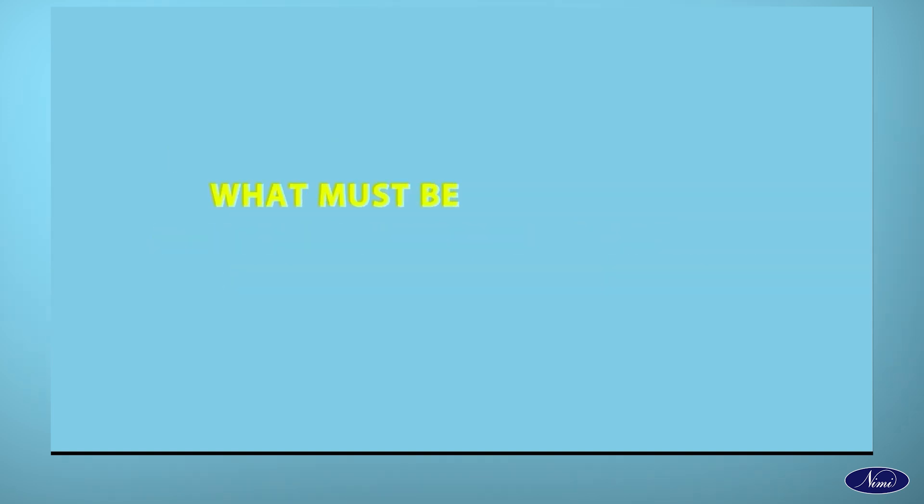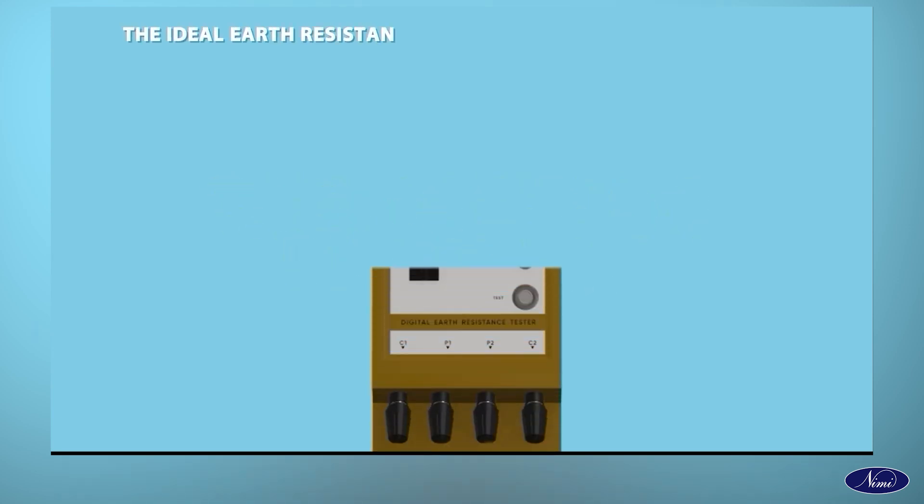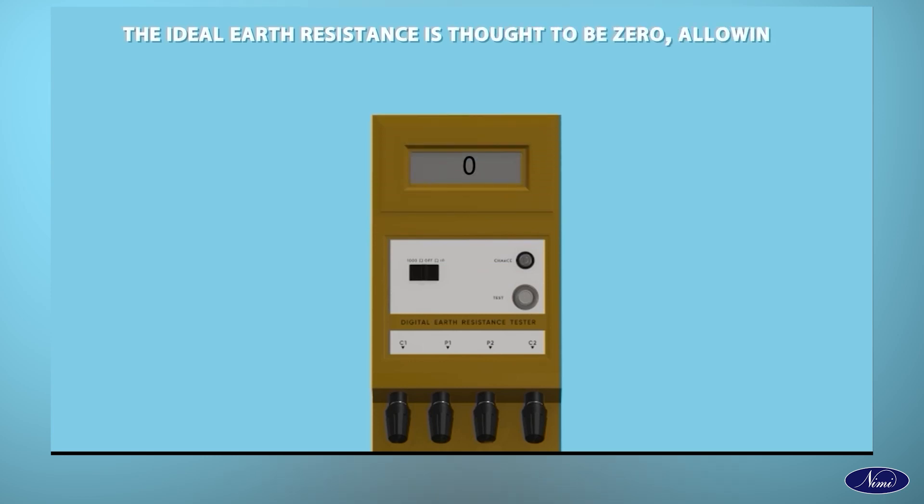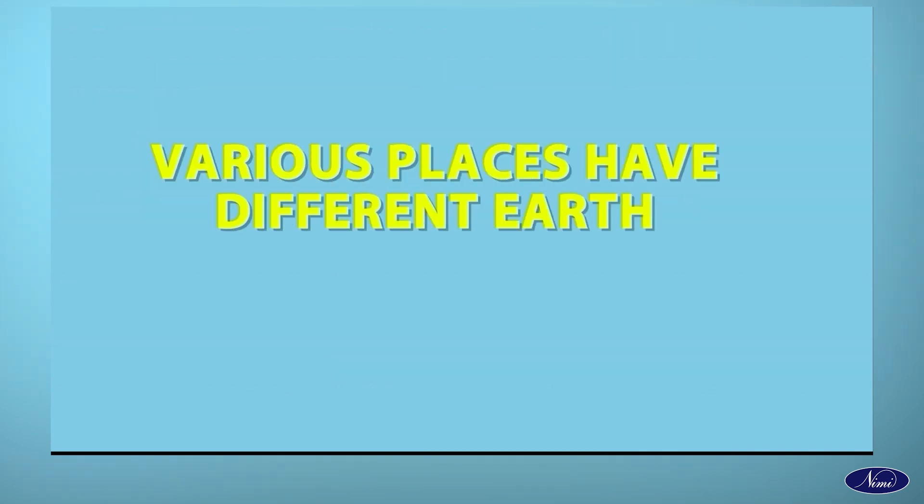What must be the value of Earth Resistance? The ideal Earth Resistance is thought to be zero, allowing a fault current to flow quickly into the ground. However, this is impossible. Various places have different Earth Resistance values.